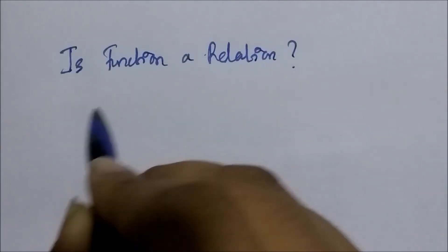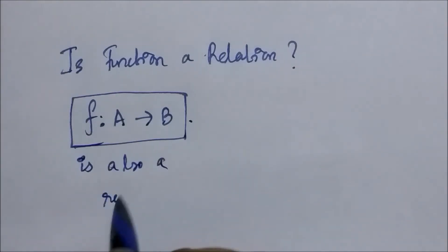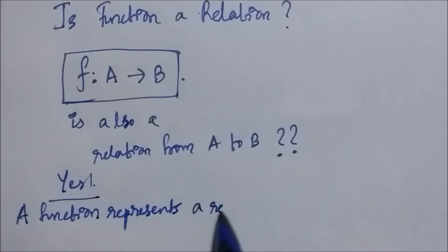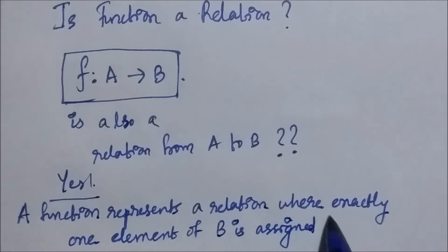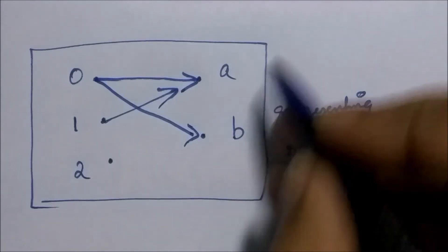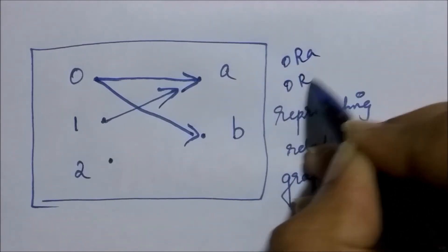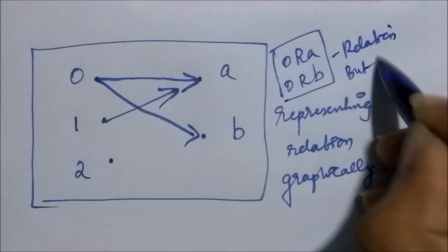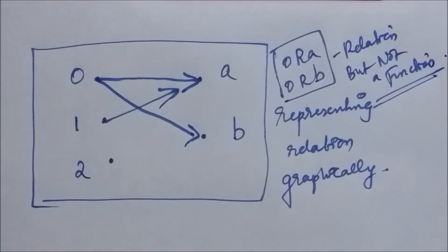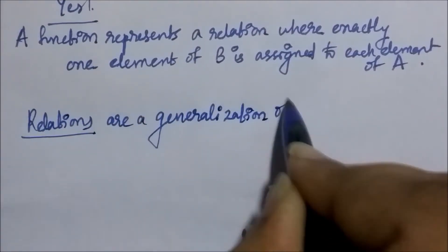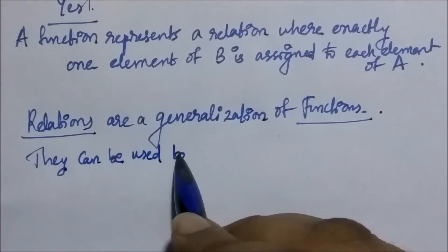Now we ask: is a function a relation? Is a function f from set A to set B also a relation from A to B? The answer is yes. A function represents a relation where exactly one element of B is related to each element of A. In our example, 0 is related to both a and b, so this is not a function — it is a relation. If it were a function, 0 would be mapped to exactly one element in set B, not more than one. Relations are a generalization of functions and can express a much wider class of relationships between sets.